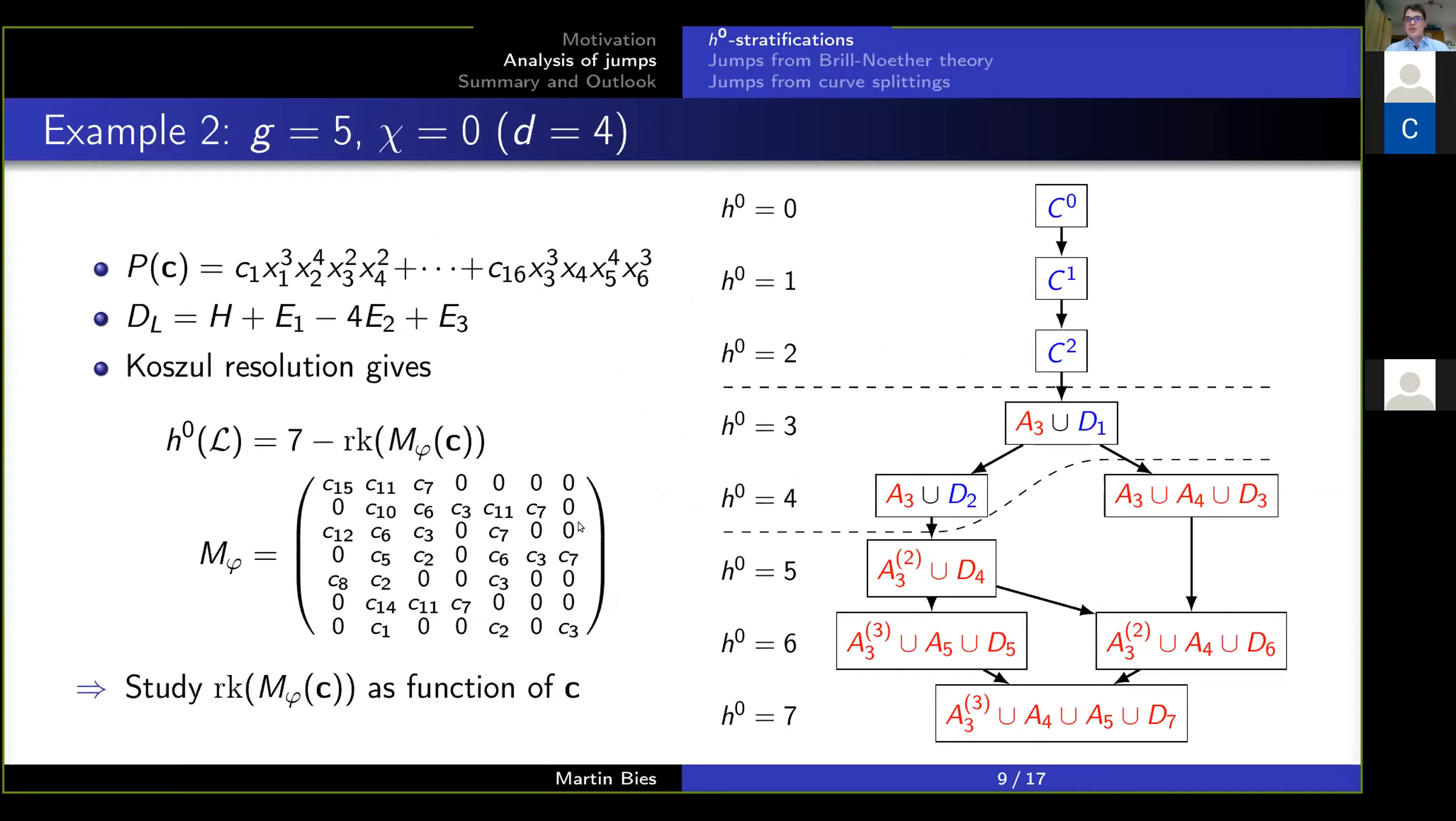And you can judge by yourself now if you find this information in the matrix very instructive. I found it more instructive, however, to look at the diagram on the right, which then really again gives the stratification of the curve geometries, where we see the jumps happen. Again, at the top, Brill-Noether theory in action. At the bottom, we have these curve splittings. In between, we have a regime where curve splittings and Brill-Noether theory matter.